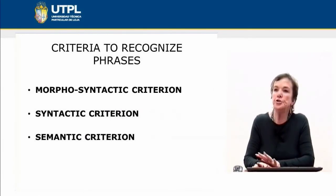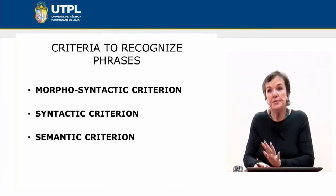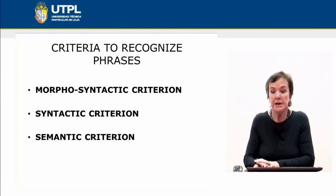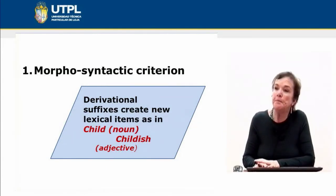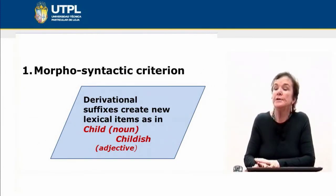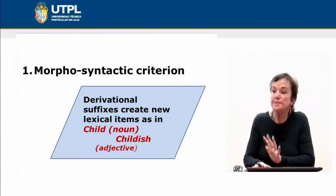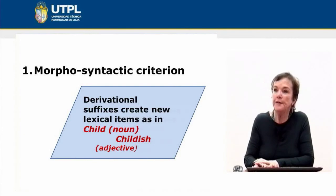We have some criteria to recognize phrases. We can talk about morphosyntactic criteria, which has a morphological part and a syntactic part, plus a semantic criterion. Regarding the morphological criteria, we talk about inflection. We have two types of affixes: derivational and inflectional.